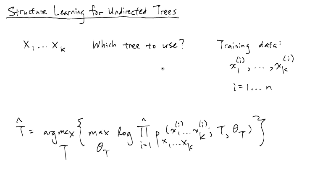To help us answer this question, we're going to have access to training data. We see n i.i.d. samples from this graphical model, where each sample contains x1 through xk superscript i — the i-th training data point. As a comment, the number of possible trees is k to the k minus 2, from a result called Cayley's formula. This grows even faster than exponential — it's super-exponential.